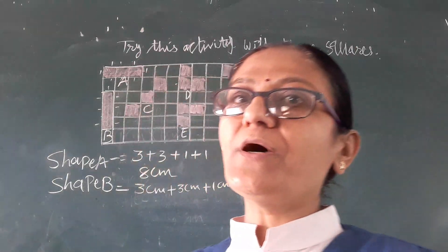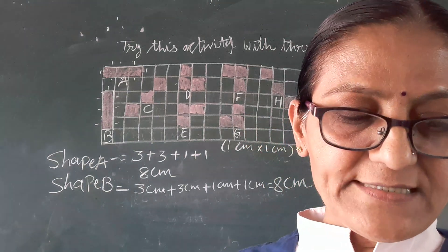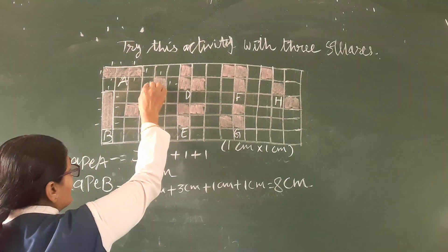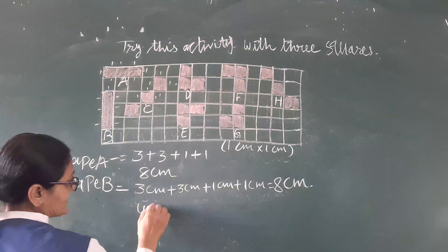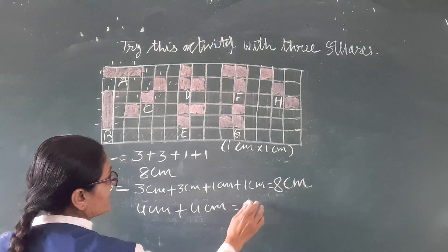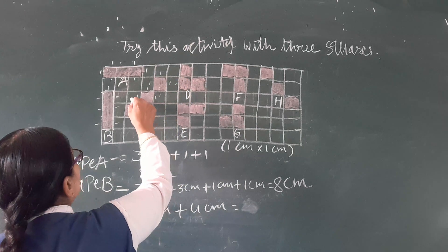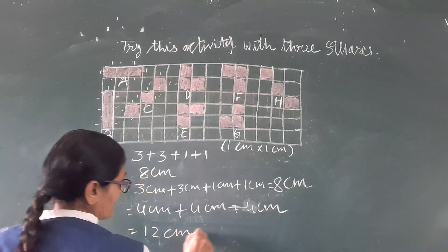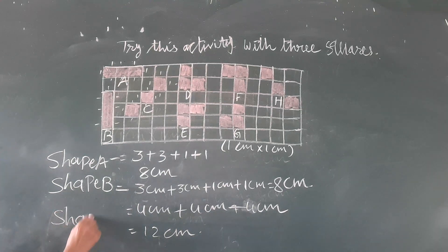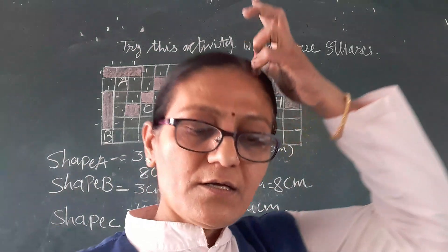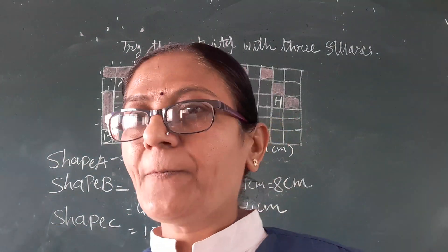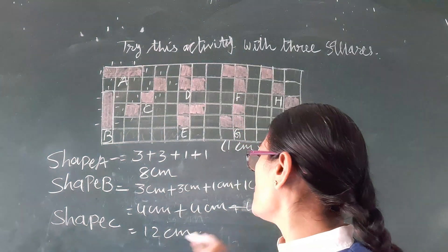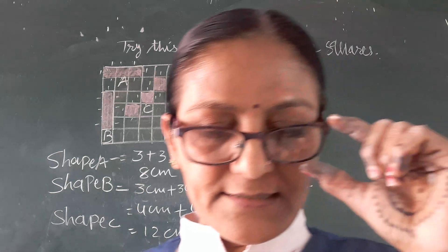Now for the length of the boundary of shape C. In shape C there is an individual square. Counting: 1, 1, 1, 1 and again 1, 1, 1, 1, means 4 cm plus 4 cm. There are 3 squares, so 4 cm plus 4 cm plus 4 cm equals 12 cm for shape C.